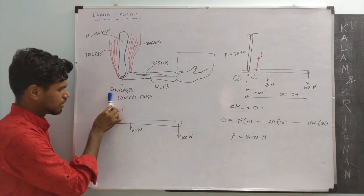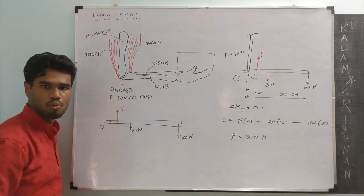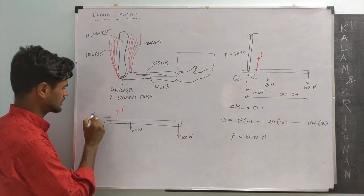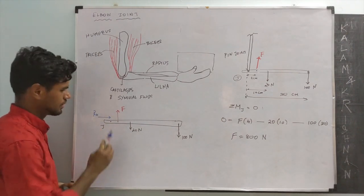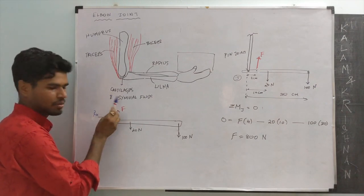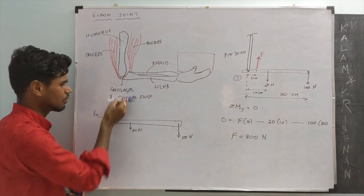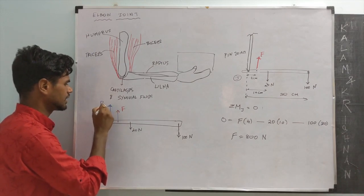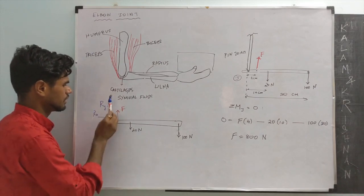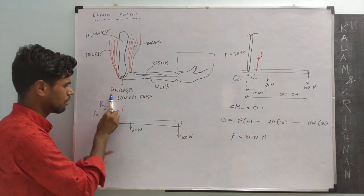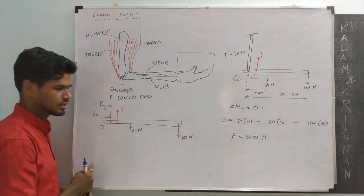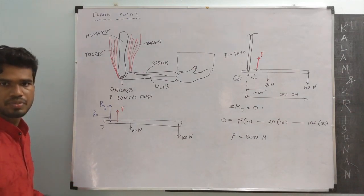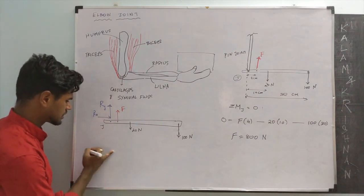With respect to the top bar, the bottom bar cannot move, so the top bar exerts a horizontal reaction force Rx. With respect to the top bar, the bottom bar cannot move in the y direction, so it exerts a vertical reaction force. With respect to the top bar, the bottom bar can rotate, so there are no moments. So there are two unknown forces. How do we find them? Again, invoke equations of equilibrium.